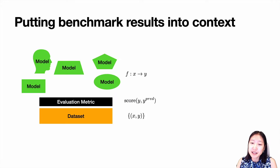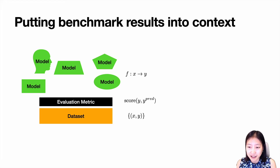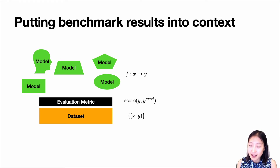A benchmark consists of three parts. First is datasets that map input x to y, and then some evaluation metric that measures how the model's predicted answer y scores compared to the annotated y. And then, of course, the model that maps input x into y.